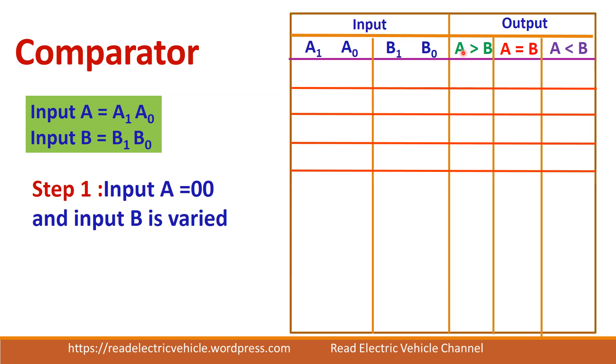At any instant, only one of the options will be correct. That is, either A will be greater than B or less than B or it can be equal to B. So output for any one of the condition, it will be 1 and it will be 0 for the remaining condition.